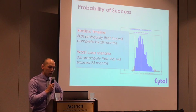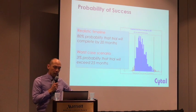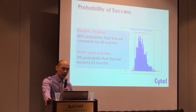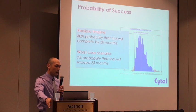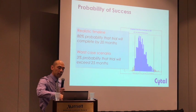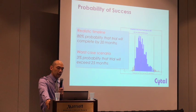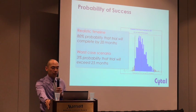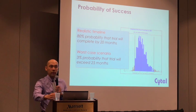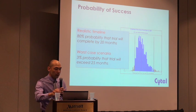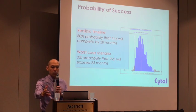So what are the outputs of this software? Here is an example histogram of the predicted time from trial start to the LSR — the last subject randomized. You can see there's quite a possible range of recruitment duration, but there are some tendencies and we can probe this graph to get solid numbers about probability of success. For example, if we want to complete the trial by 20 months, this simulation shows an 80% chance of that happening. And if we want a worst-case scenario, there's a 3% probability that the trial will take longer than 25 months.